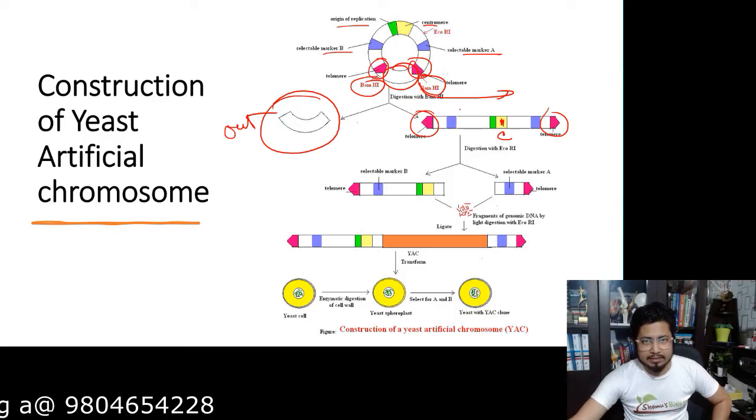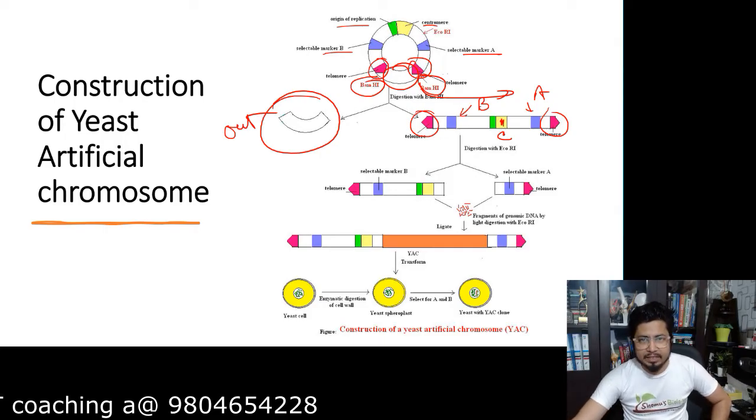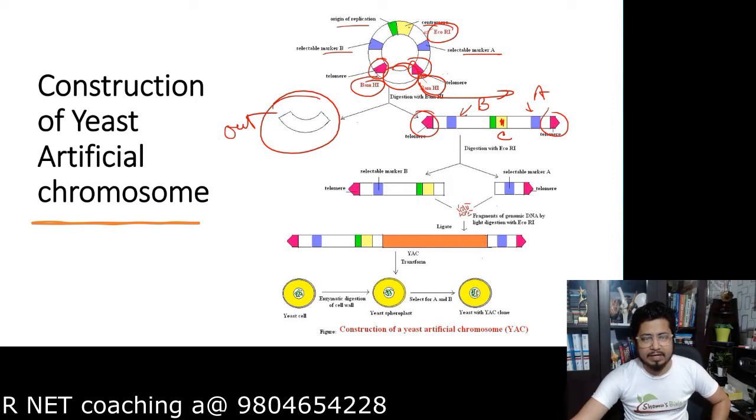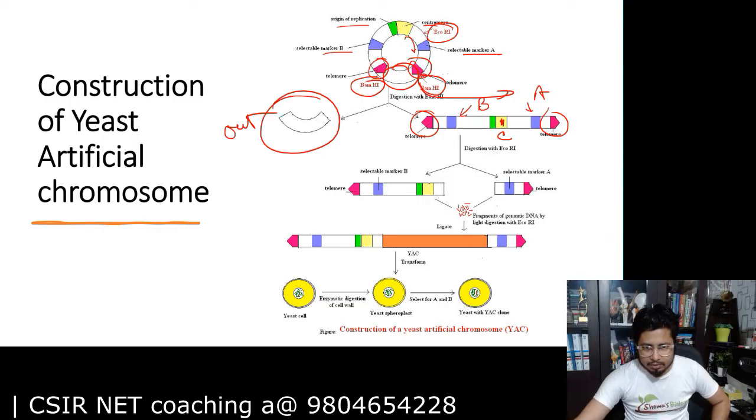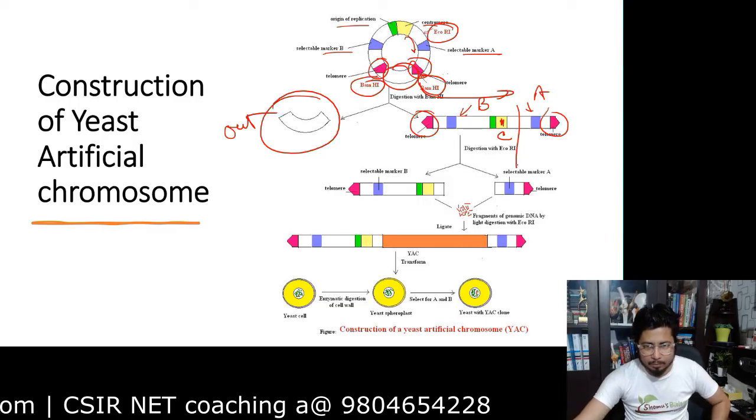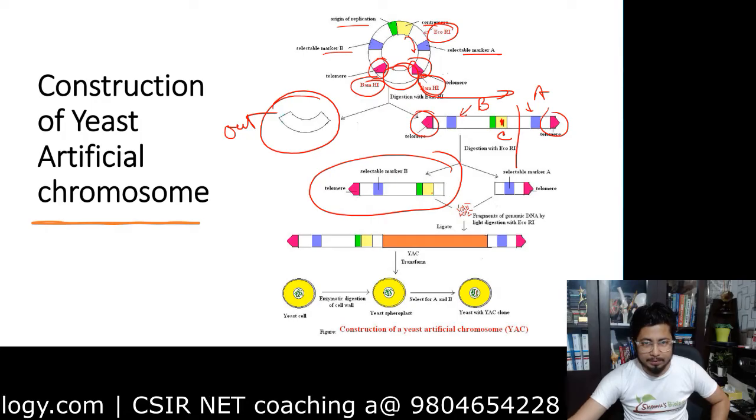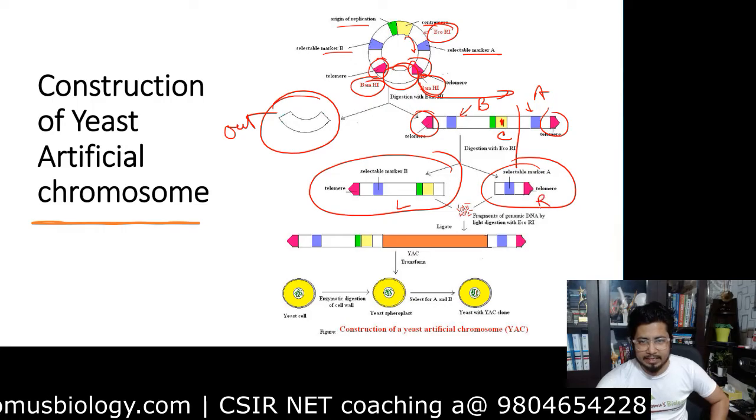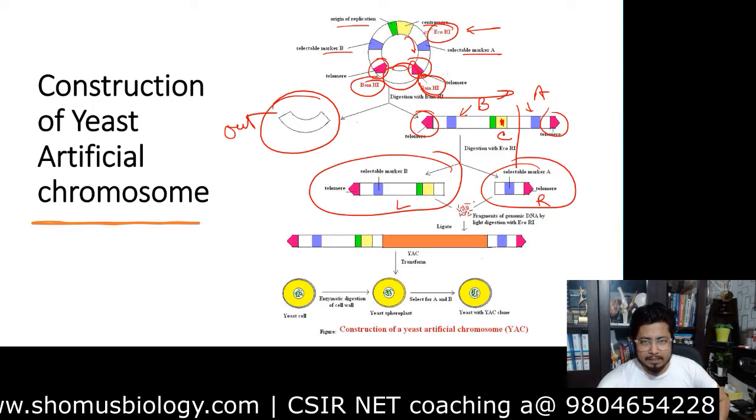We have this selectable marker B, selectable marker A in their position. And now, if we treat with the second restriction endonuclease, that is ECO R1, it will cleave right next to the centromere from the clockwise direction. What we have here is a single telomere with selectable marker B with centromere on the left hand side, and selectable marker A with telomere on the right hand side. This is the cleavage after ECO R1.